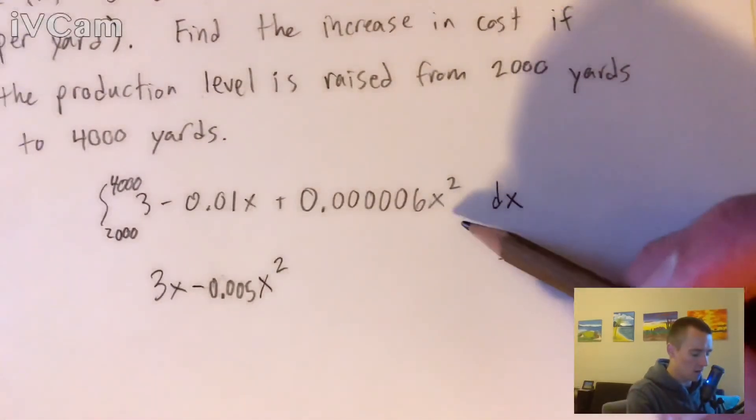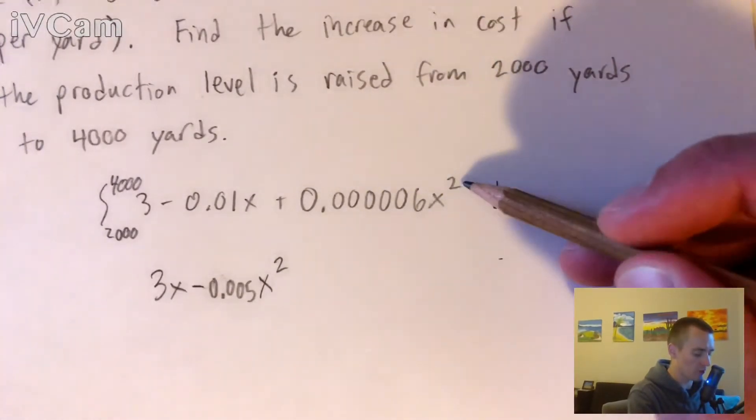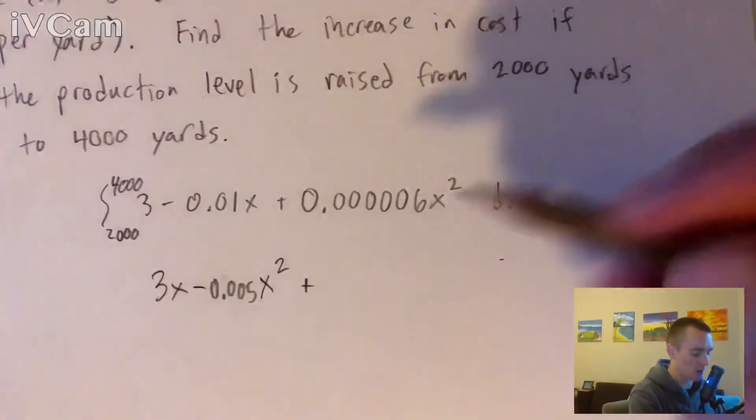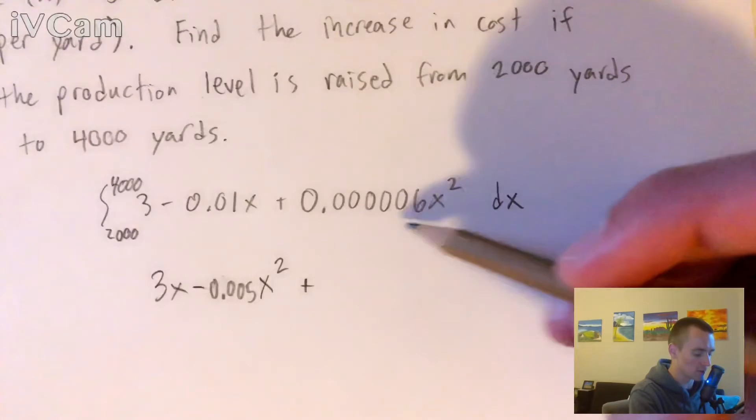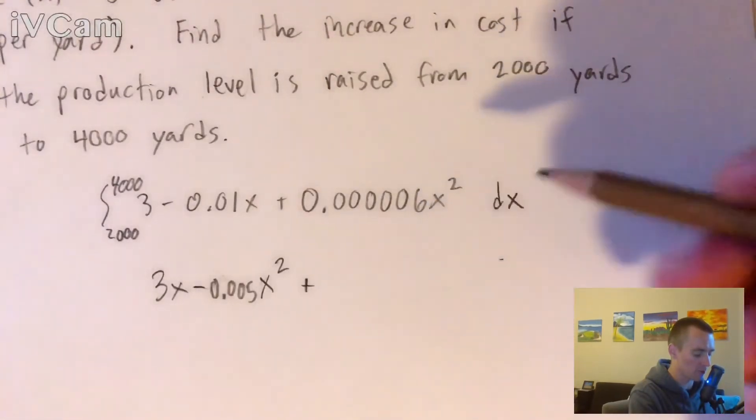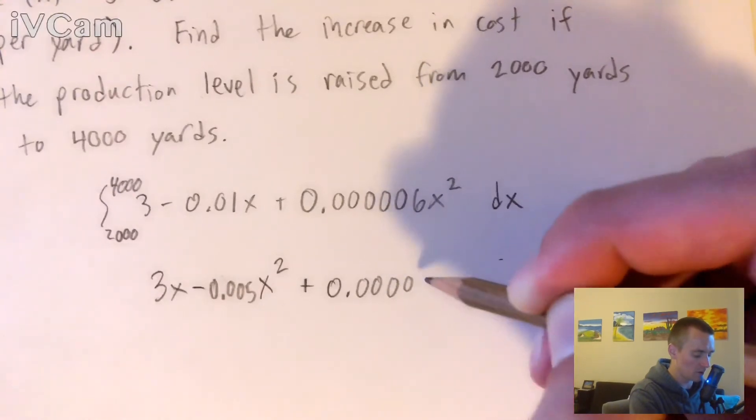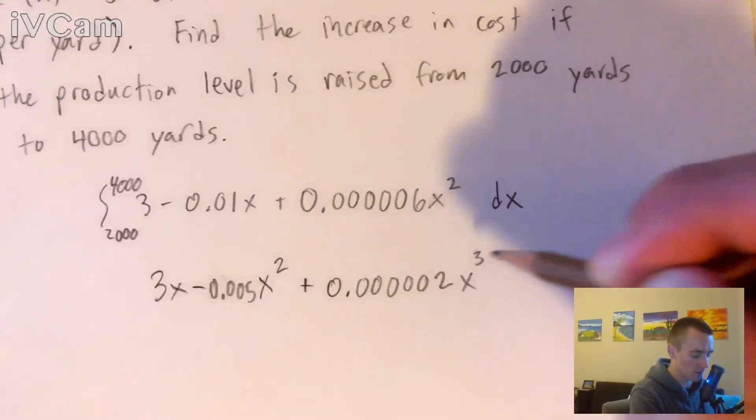And then again, we can use the power rule for this term too. We're going to raise our x to the third power and then divide our coefficient by 3 because our new power is going to be 3. So 0.00006 divided by 3 is going to give us 0.00002x to the third.